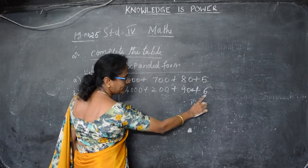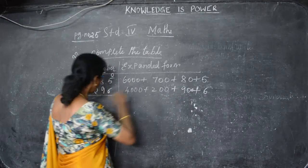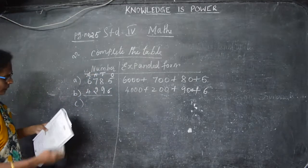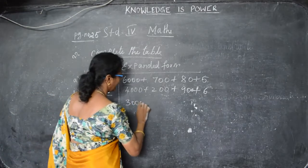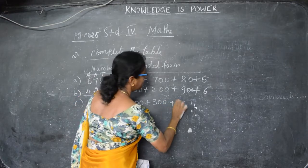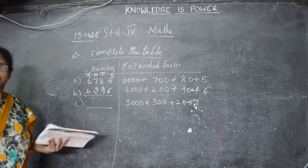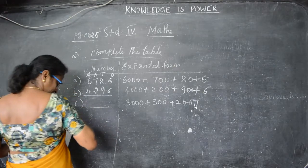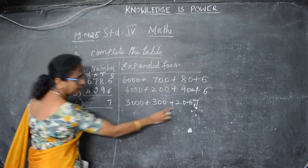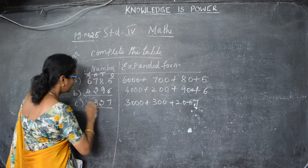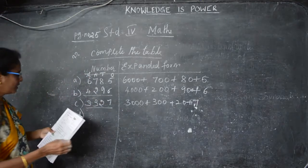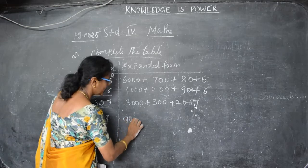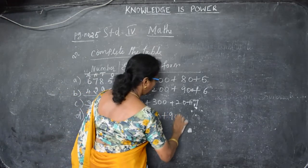Start from the ones digit. Ones place has 6, tens place has 9 (so 90), hundreds place has 2 (200), thousands place has 4 (4,000) — so the number is 4,296. Next: 3,000 + 300 + 20 + 7. So ones is 7, tens is 2, hundreds is 3, thousands is 3 — the number is 3,327. Then D sum: 9,999. So expanded form is 9,000 + 900 + 90 + 9.